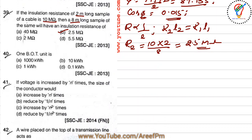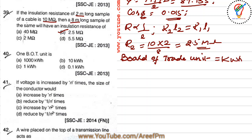Question 40: what is the Board of Trade unit? The Board of Trade unit of electrical energy is one kilowatt-hour. Option C is the right answer.